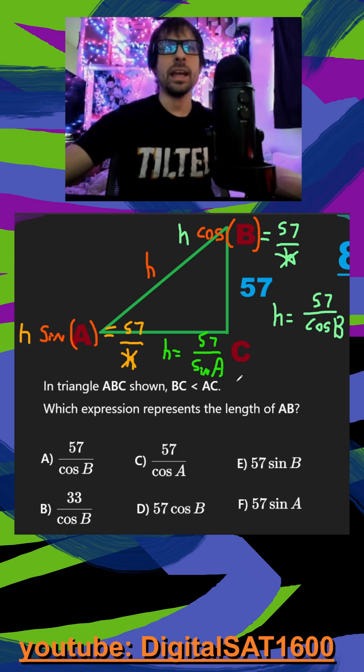Now, I just look for one of my answers down below. And I see right off the bat in A, 57 over cosine of B. Just to make sure, do I see 57 over sine of A? I don't. It looks like it's just going to be A here.